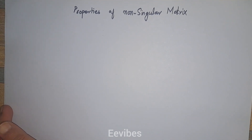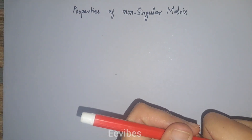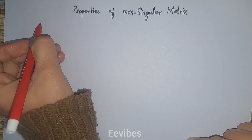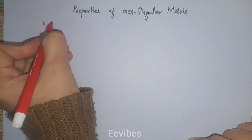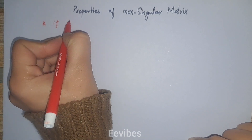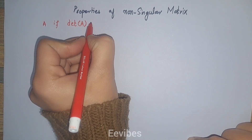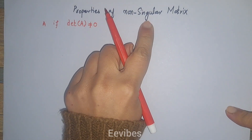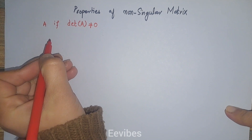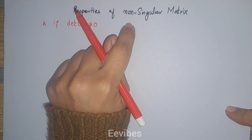Assalamu alaikum, this is Asma Mushtaq from Double E Wipes, and in this tutorial I'm going to discuss some of the properties of non-singular matrices. First of all, you need to understand what a non-singular matrix is. For any matrix A, if the determinant of that matrix is not equal to zero, then such matrices are known as non-singular matrices. This is how we identify whether a given matrix is singular or not.